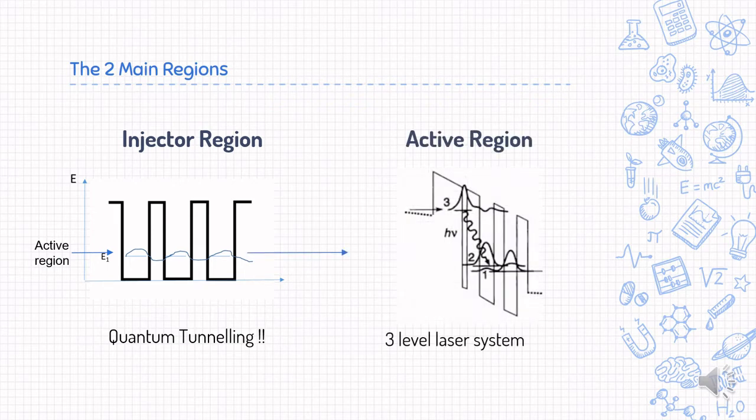Secondly, let us look at the active region. It is called active region because photons are released here. It comprises of three coupled quantum wells. We can visualize it as three 1D finite potential wells connected alongside each other diagonally in space.